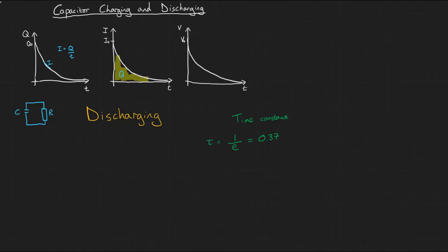For capacitor circuits, the time constant can be calculated by multiplying the capacitance of the capacitor by the resistance of the resistor through which it is discharging. So the time constant is equal to RC.